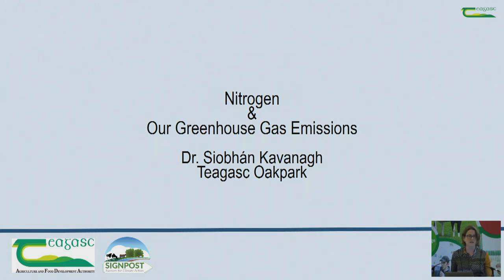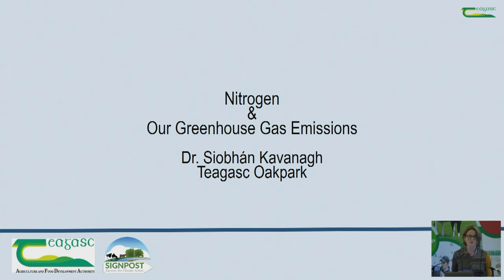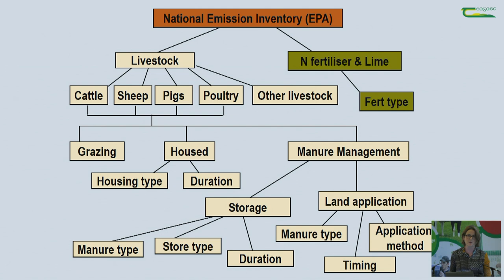Before we get into that, I think it's useful to reflect on why exactly we're looking at reducing nitrogen use in the context of meeting our emissions targets. We have a target to reduce emissions by 25 percent by 2030. Emissions in agriculture and indeed all sectors are calculated by the Environmental Protection Agency using the national inventory — basically an accounting system that draws on data from various sources to generate the emissions within the different sectors.